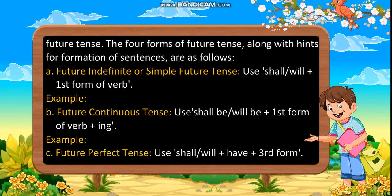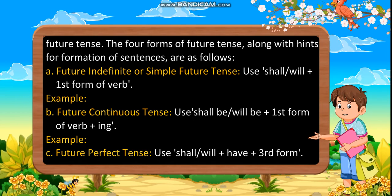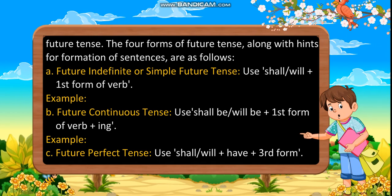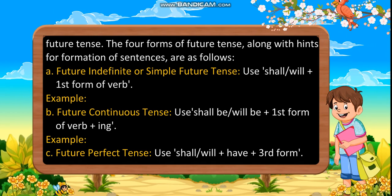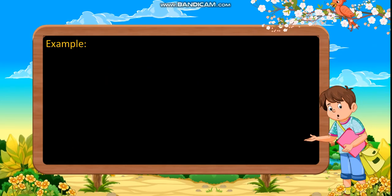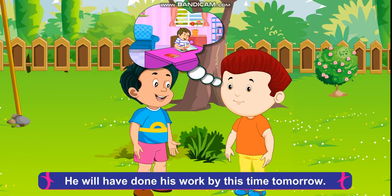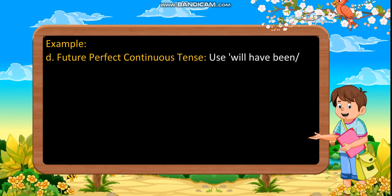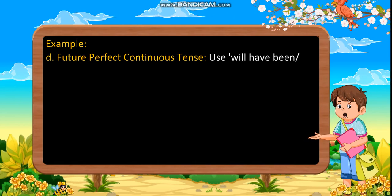Future perfect tense: Use shall or will plus have plus the third form of verb. Example: He will have done his work by this time tomorrow.